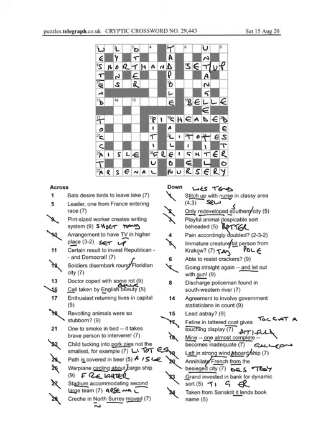Twelve across, soldiers, it begins with O, this, and it's a Florida city, so it's going to be Orlando, I think. Ordinary Rifleman, OR, we've had that one before. Disembark is land, and then round is just another O, Orlando. That's twelve across.